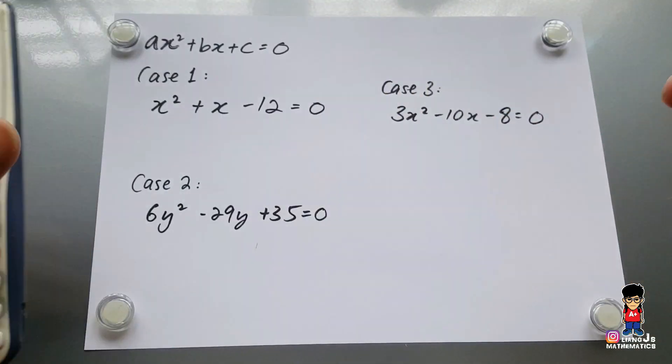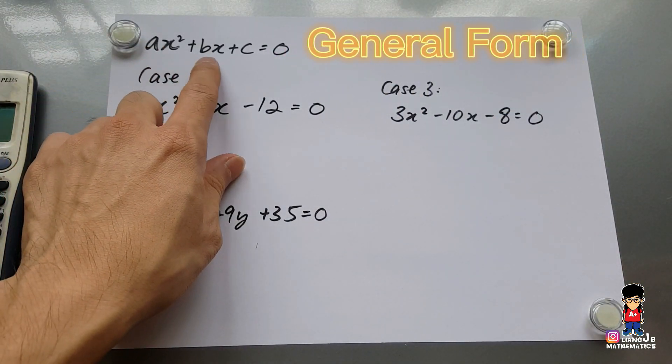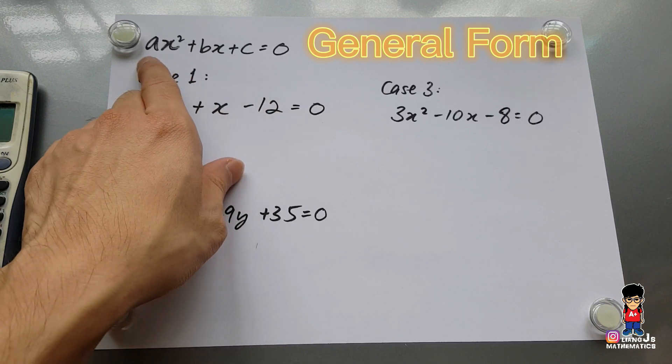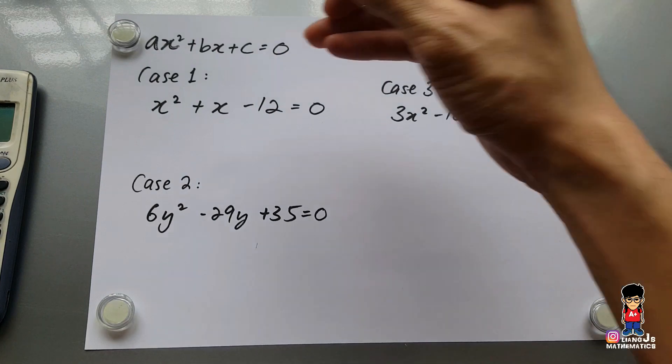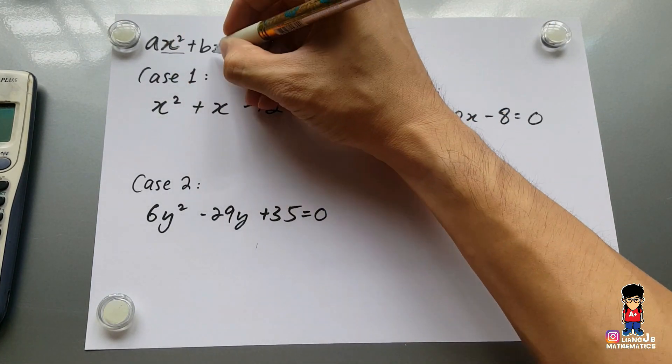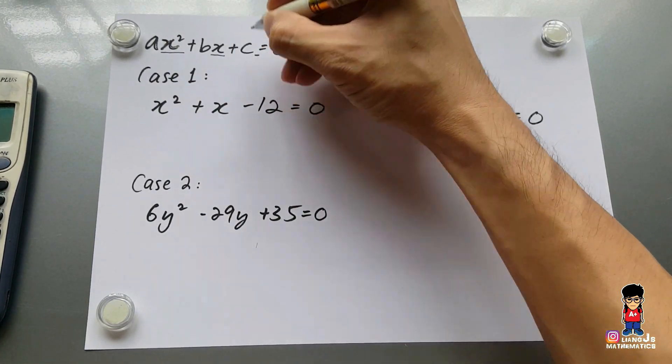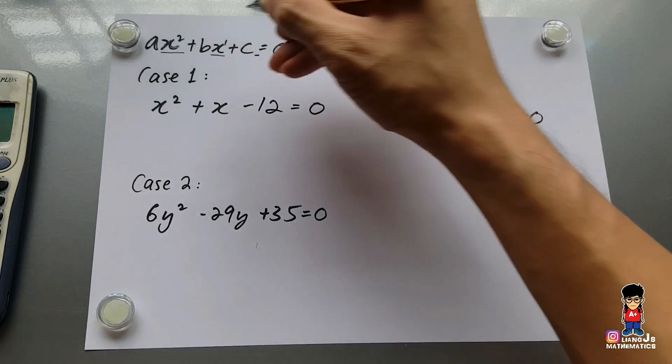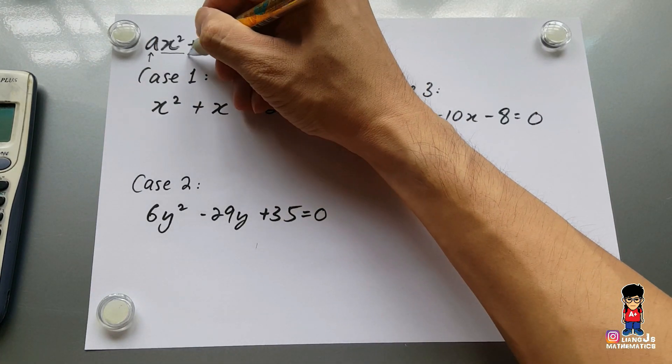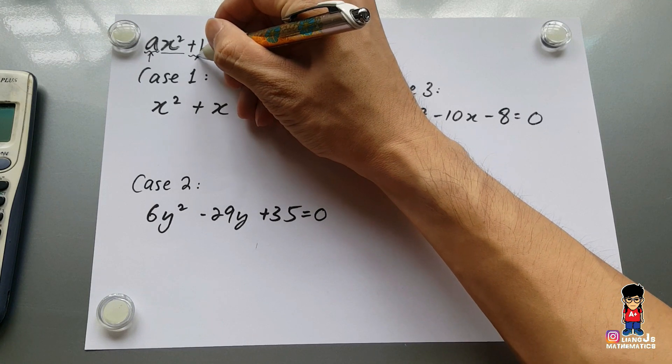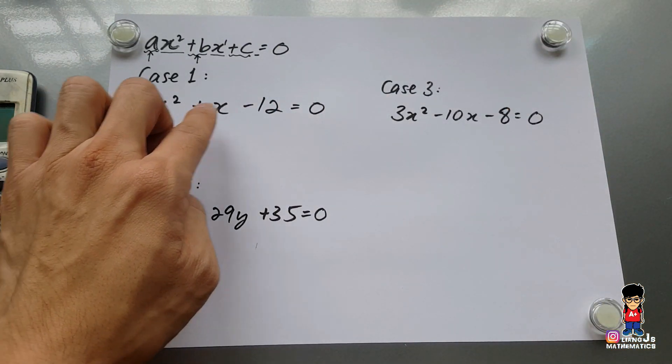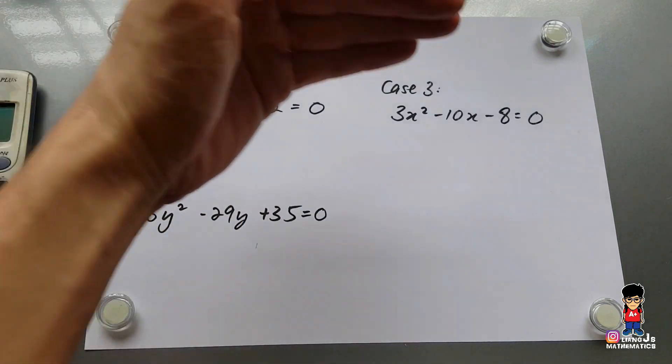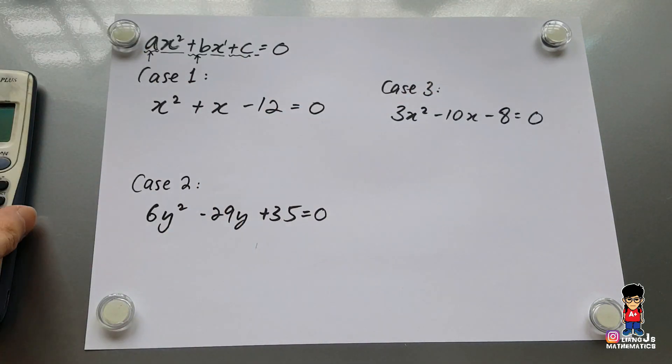Just a quick one again on your general form. Your general form is stated on top for you already: AX² + BX + C = 0, where your main focus is on X², X, and without the X. Of course, you need your A, you need your B, you need your C. So when you come into case number one, I already prepared three different cases for you to handle.